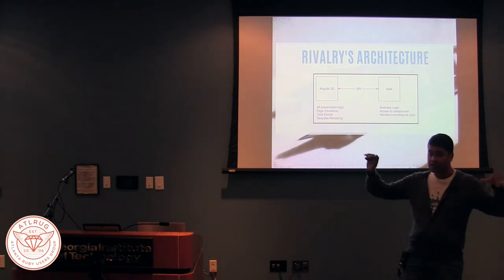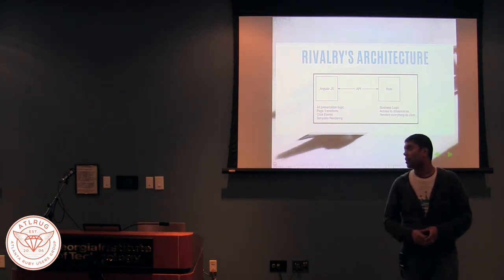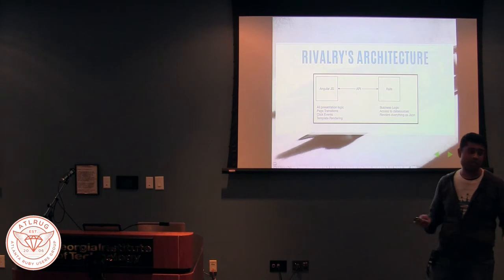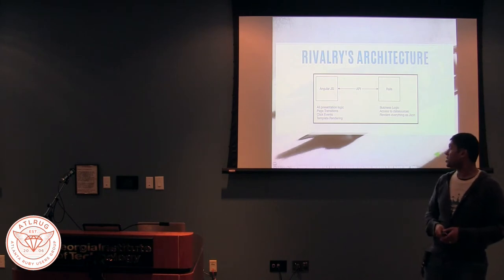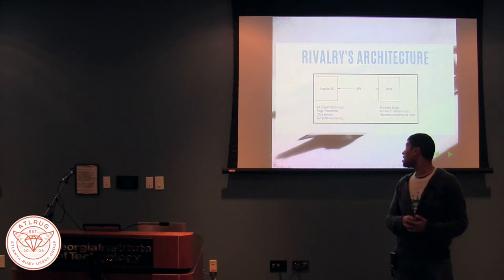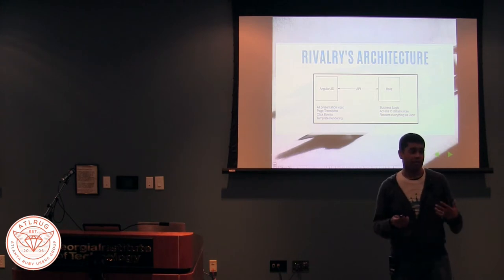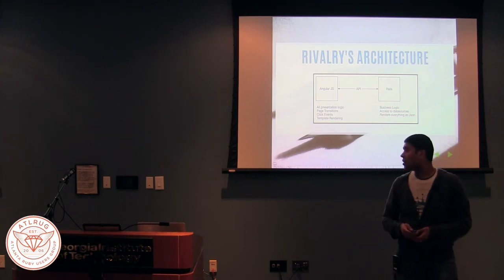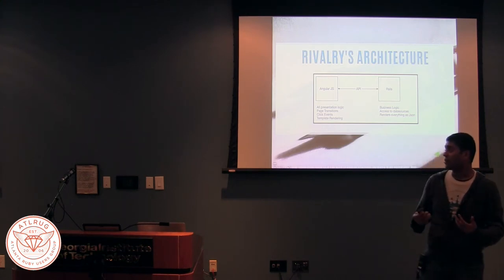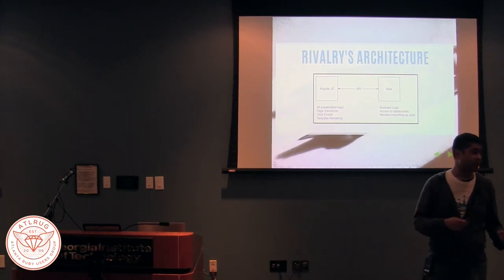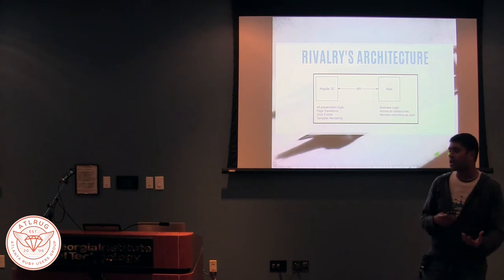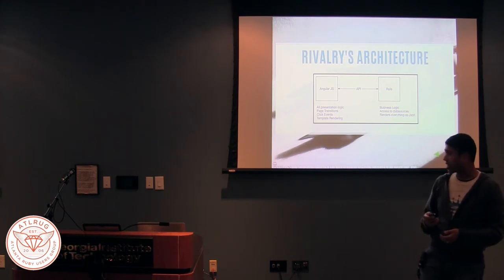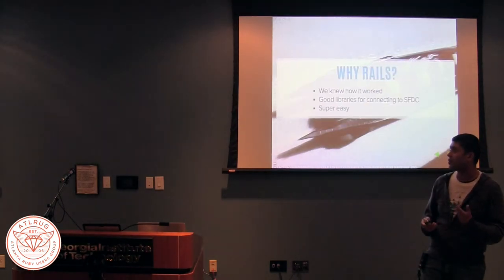Rivalry's architecture — simplified — has AngularJS on the front end doing all of our presentation logic: page transitions, click events, template rendering. We have it hooked up to Google Analytics so any action sends information back out to Google. Rails is really there for our business logic: it accesses data sources and communicates everything to the front end via JSON calls. We don't do any templating or page transitions inside our Rails app, so Rails is pretty simple from this perspective.